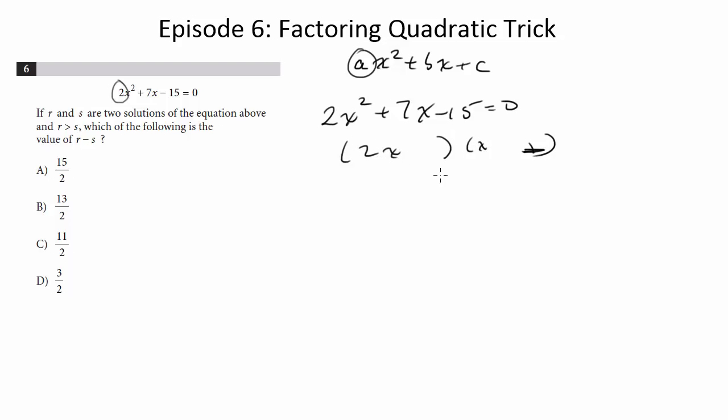So it just gets a bit more complicated. Now you might be able to do this by what's called by inspection, in other words, just by looking at it, testing out numbers and seeing which one works. You might be able to do it that way, and that's great, but what I'm going to do is I'm going to show you a little trick that will help you do any of these questions where your a is other than 1. It's a nice little shortcut that really helps.